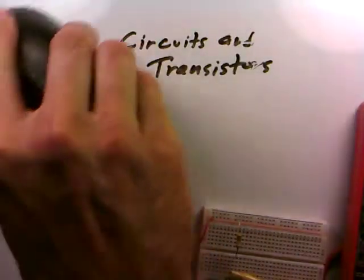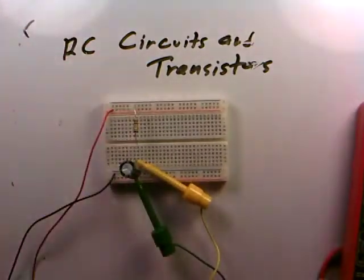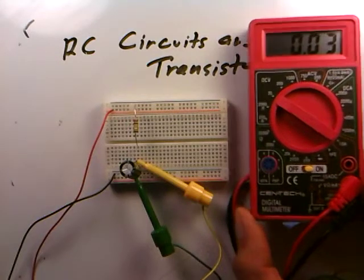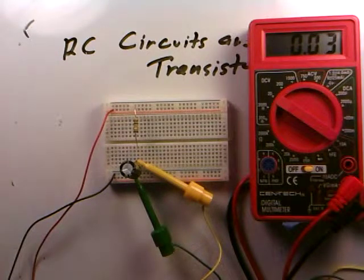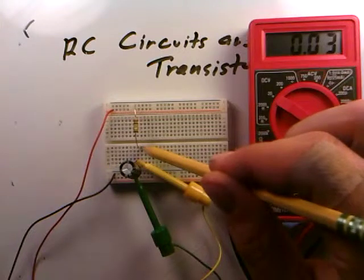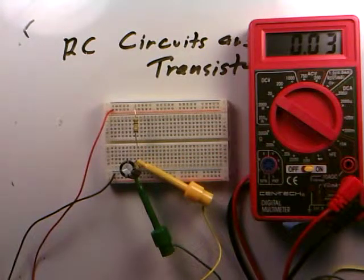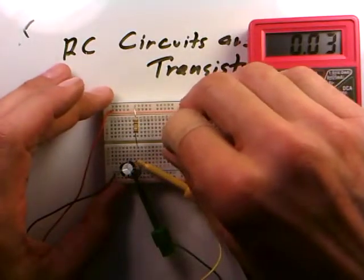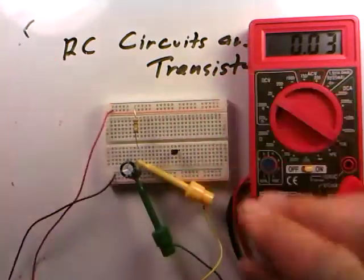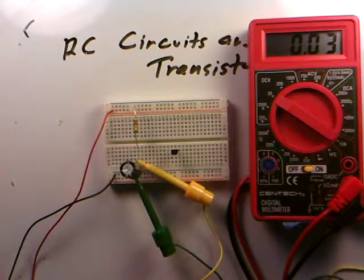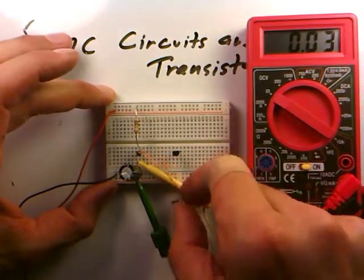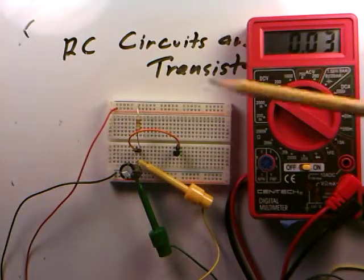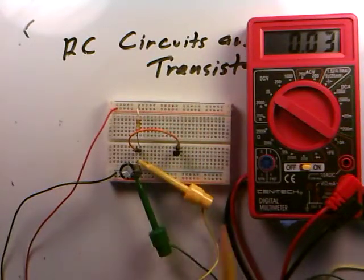But now look what interesting combination of stuff we have. We have this ability to control how quickly voltages appear. We saw the voltage come up nice and slowly at this midpoint between the resistor and the capacitor. So we start thinking, well, the capacitor starts at 0 volts and rises very slowly. It might have taken a few seconds to reach 0.6 volts. What happens if we connect this midpoint directly to the base of a transistor?